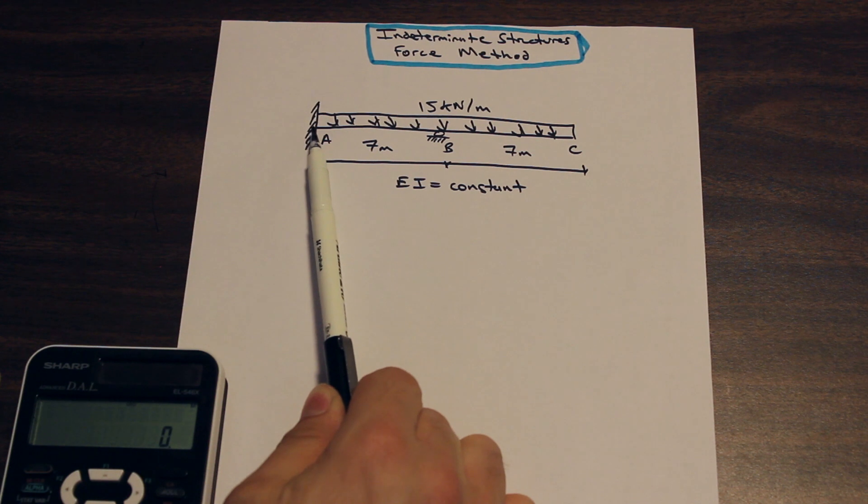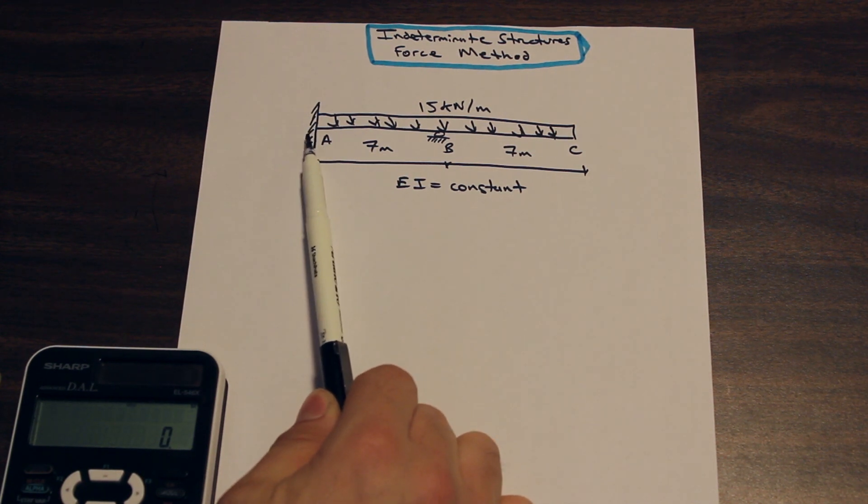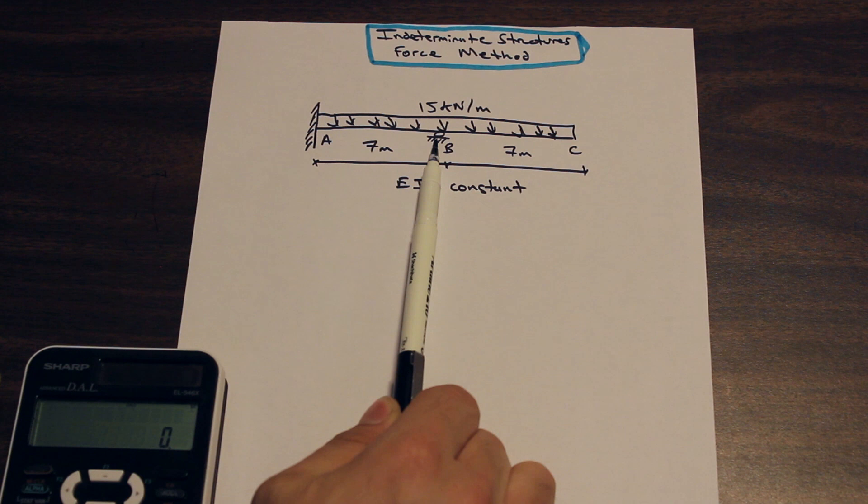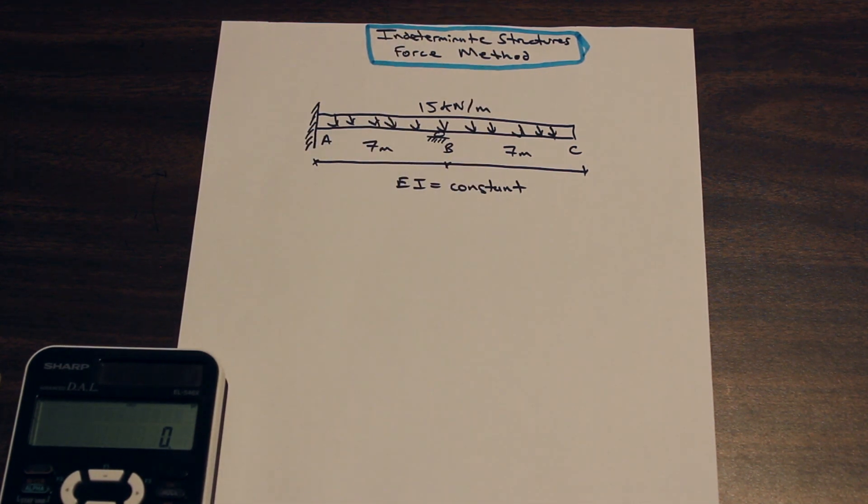So here we have a fixed support. So as you know, we have an x reaction, a y reaction, and a moment reaction, and at b we have a vertical reaction. So that means total we have four reactions.